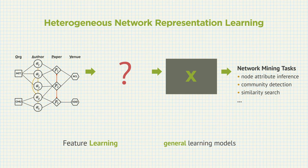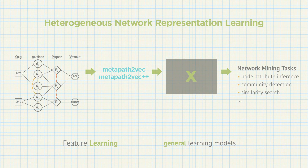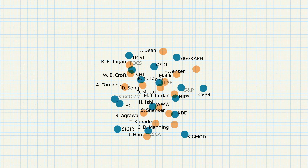Network heterogeneity presents unique challenges that cannot be handled by previous representation learning models specifically designed for homogeneous networks. In this work, we propose two representation learning models: metapath2vec and metapath2vec++. These two models can account for both the semantic and structural correlations in heterogeneous networks. Let's see an example of learning a heterogeneous network embedding for academic networks.